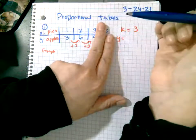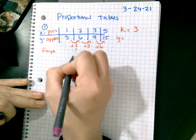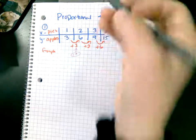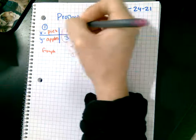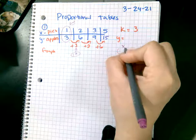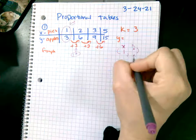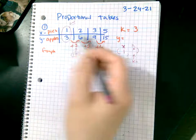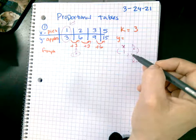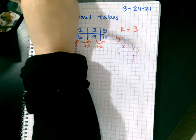The second way of determining it: if you know when x is one, whatever y is, that's your k. So when x is one, whatever y is, that's your k. If you're given an ordered pair where x is one, whatever y is, that's your unit rate, only if it's all proportional.